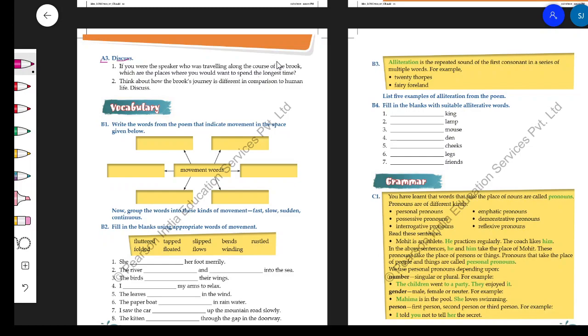You have seen the course of the brook, right? Brook ki journey ka rasta. Ab aapne decide karna hai ki kis place pe aap sabse zyada time spend karna chahenge. This individually can vary. Personally, I would prefer spending more time at Philip's farm where the brook meets the river, right?